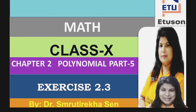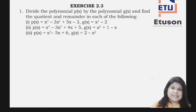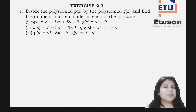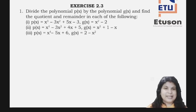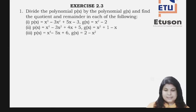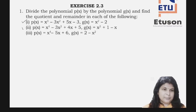So let us start the class. Are you all ready? So here comes Exercise 2.3. The first question is: divide the polynomial P(x) by the polynomial G(x) and find the quotient and the remainder in each of the following. There are three parts. I will do parts 1 and 2 for you, and part 3 is homework for you.